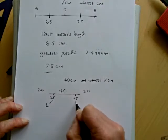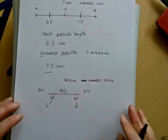So 35 is the least it could be, and 45 is the greatest.